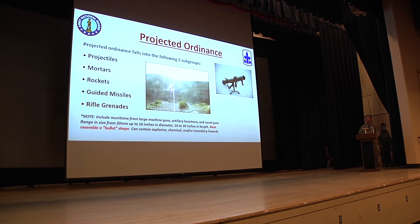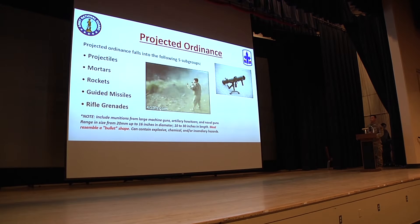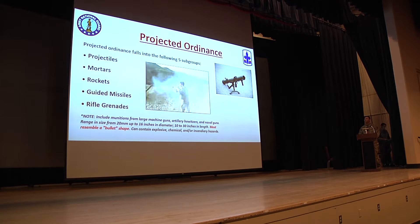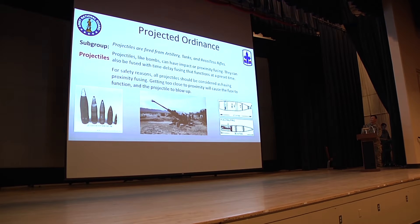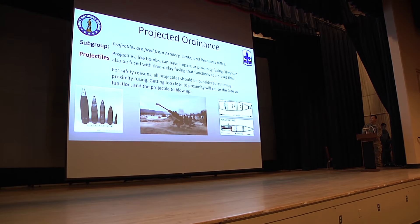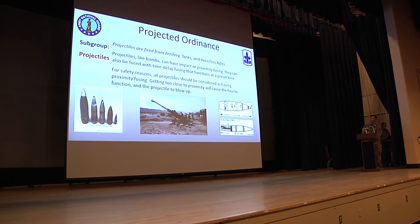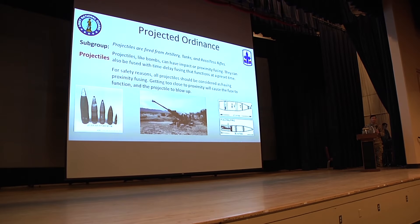Projected ordnance has five subgroups: projectiles, mortar, rockets, guided missiles, and rifle grenades. Fired from artillery, tanks, and recoilless rifles, like bombs, they can have impact or proximity fuzes. They can also be fused with time delays. For safety considerations, all projectiles should be considered as having proximity fusing — don't get too close, as proximity will cause the fuze to function and the projectile to detonate.